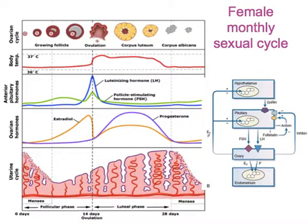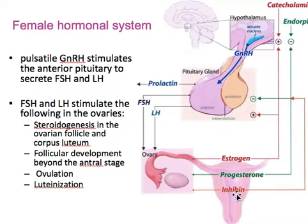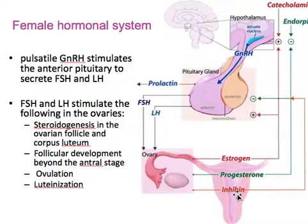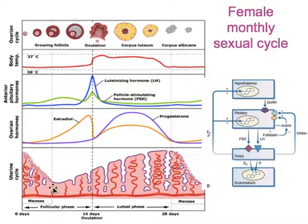This axis is unique because the end hormones not only provide negative feedback to the hypothalamus and pituitary, but at a certain level can also provide positive feedback — as with the induction of the LH surge to produce ovulation.